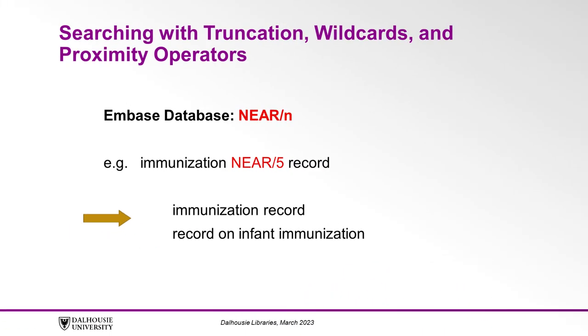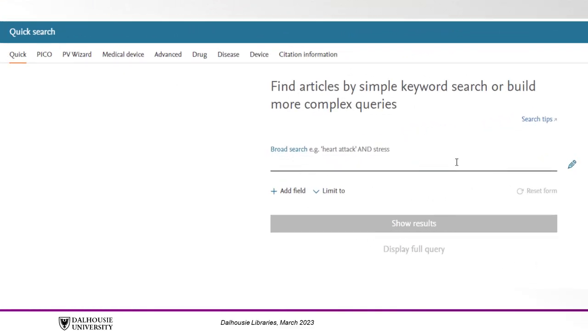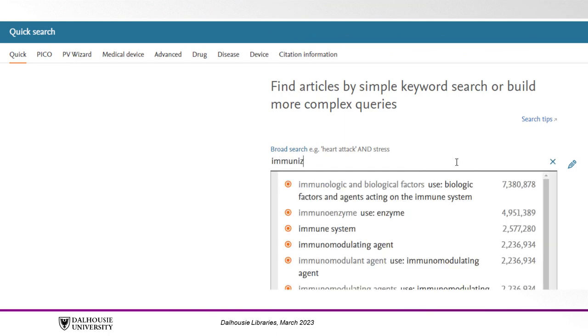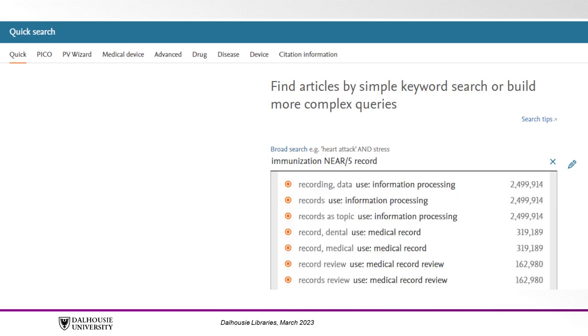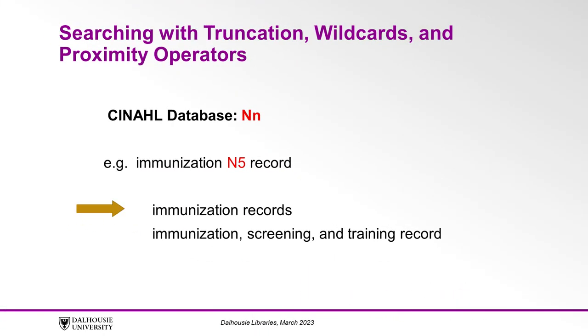Using Embase, proximity operators for phrases can be done using the capital NEAR command, and you can tell Embase how close your keywords must be together. In our example, we have entered 'immunization NEAR/5 record' in Embase, which means our two keywords, immunization and record, must be within five words of each other in the results.